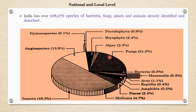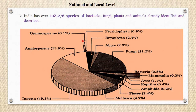The rest of the groups show their percentage contribution. The major groups include Insecta, fungi, and flowering plants, then others like Gymnosperms, Pteridophytes, Bryophytes, Bacteria, Mammals, and so on. This figure pictures the overall biodiversity contribution of various life forms in India.